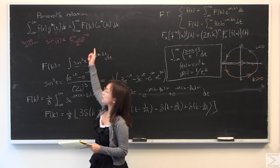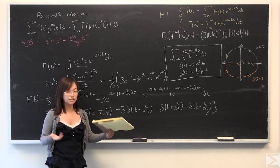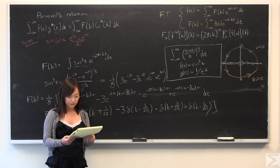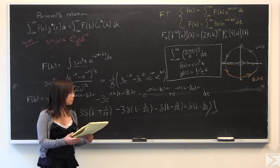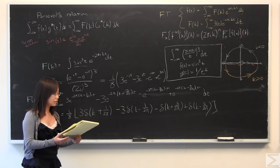However, the complex conjugate of capital G, the Fourier transform of this equation, is going to have a different complex conjugate. But we'll get to that. So I'm going to erase this. But I have it written down. So I'm going to bring it back when we need it.